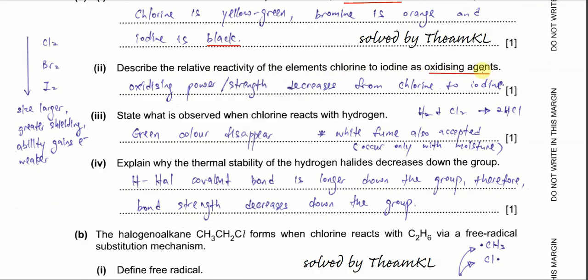First, you need to know what an oxidizing agent is. It means it oxidizes others — at the same time, it gains electrons. It needs to gain electrons from others, so others get oxidized and release electrons, and the halogens gain those electrons. That's why we say the halogen is an oxidizing agent.